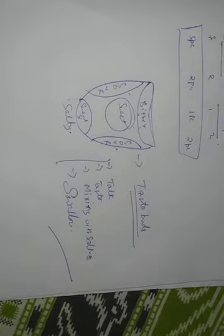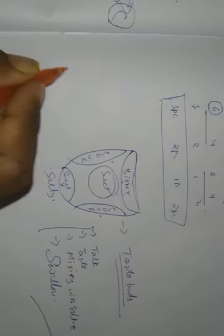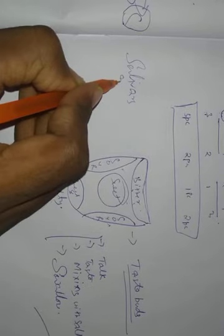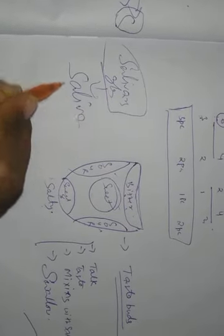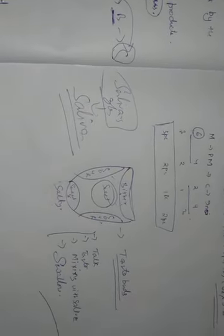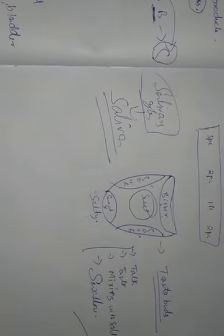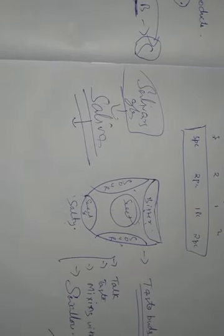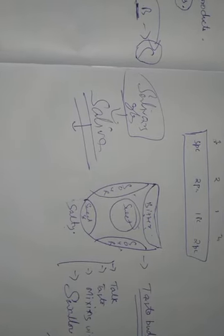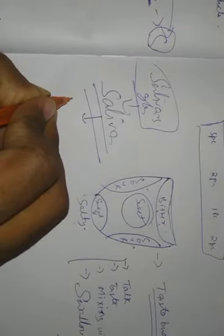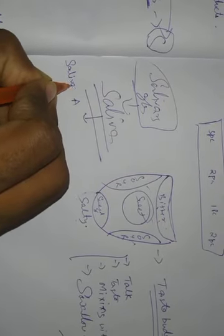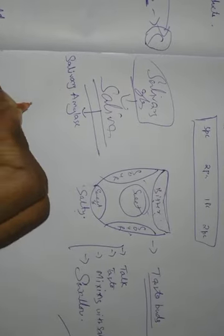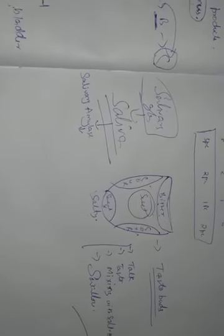Now, salivary glands - what are salivary glands? They produce saliva. In saliva there is a special enzyme. Enzyme means think of it as something that helps in digestion. The name of that enzyme is salivary amylase.